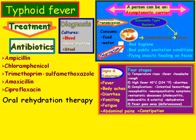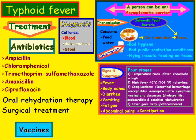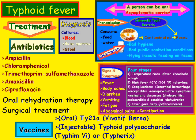There is also oral rehydration therapy, and possible surgical treatment in cases of intestinal perforation. On the prevention side, there are vaccines available, such as the oral Ty21a and the injectable typhoid polysaccharide vaccine. That is essentially an overview of typhoid fever — thank you for watching.